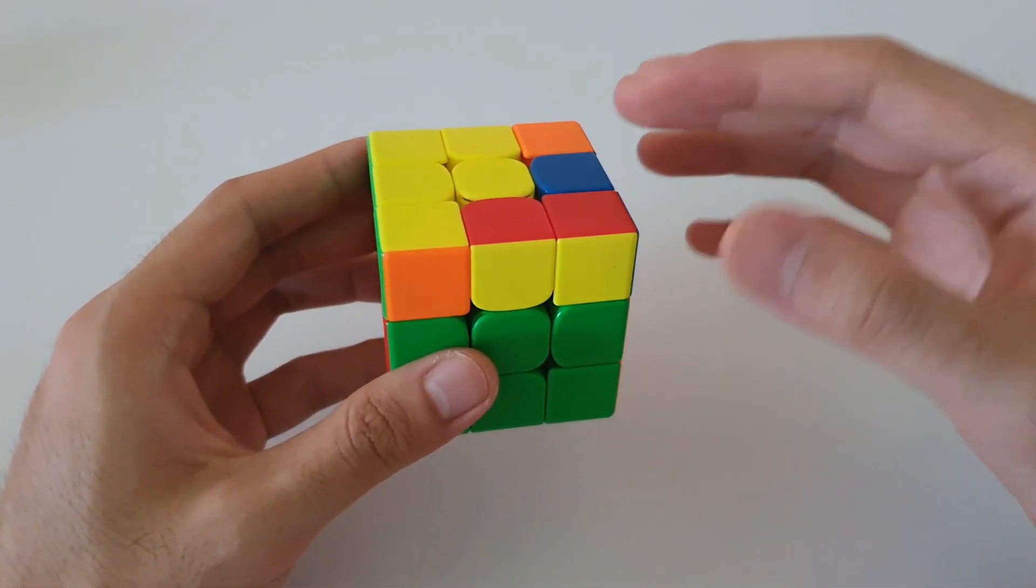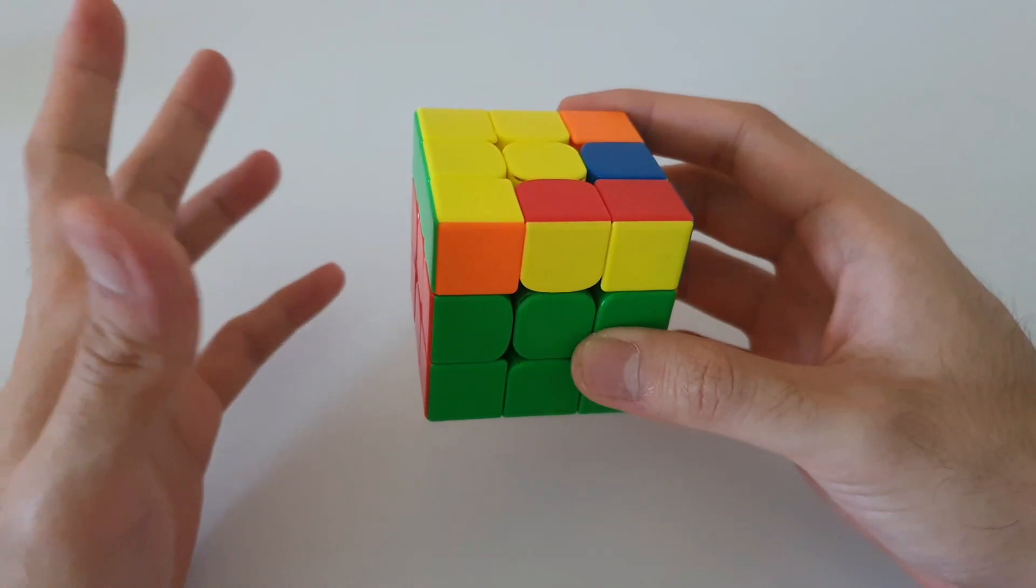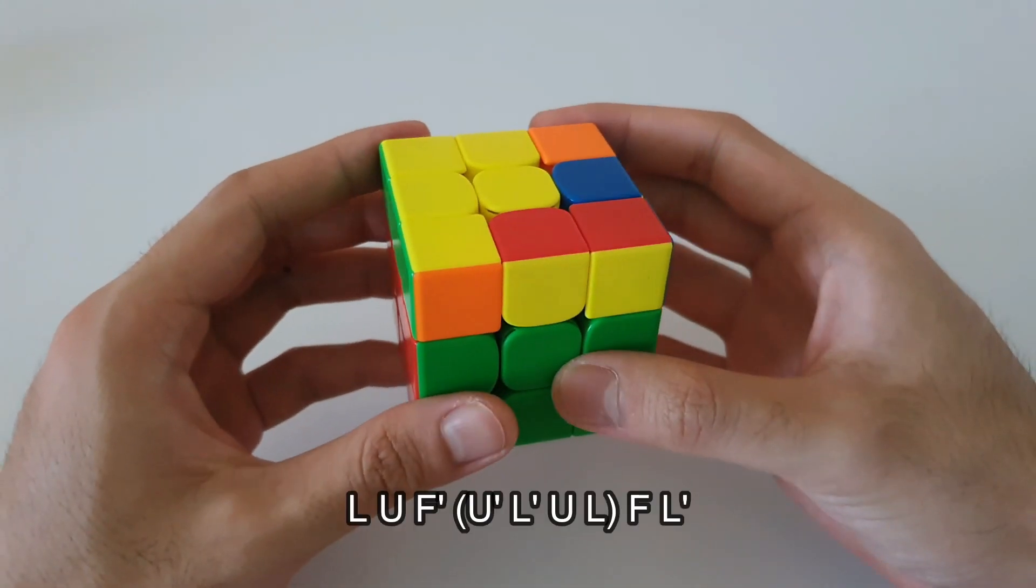And so when you hear mirror image you can immediately think you can do the same algorithm with your left hand. So in this case same as the algorithm that I've shown previously but just done with your left hand. So it goes like this.